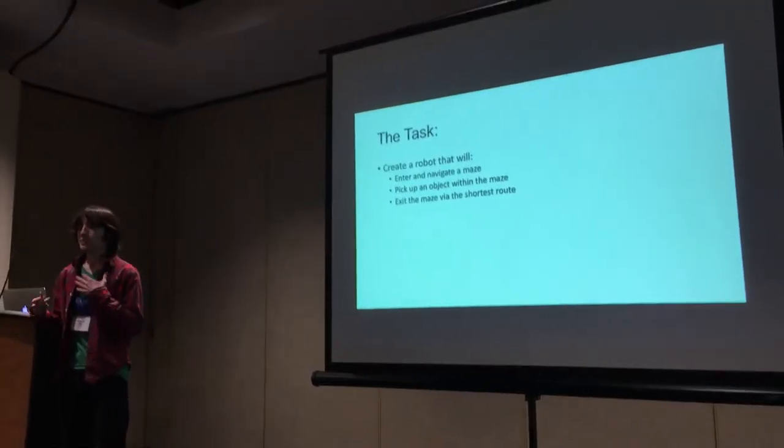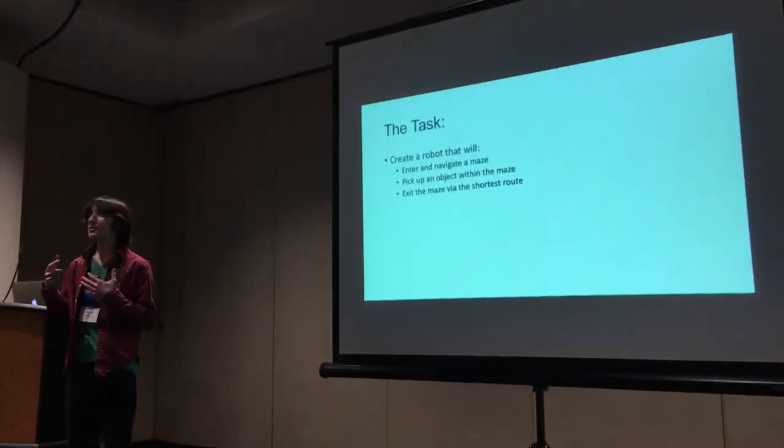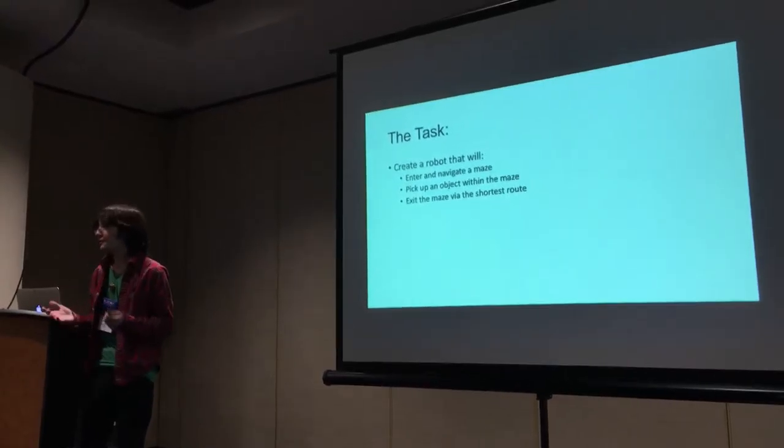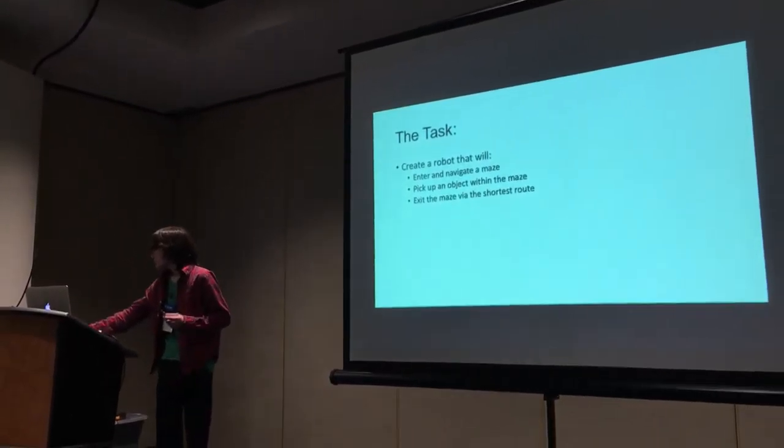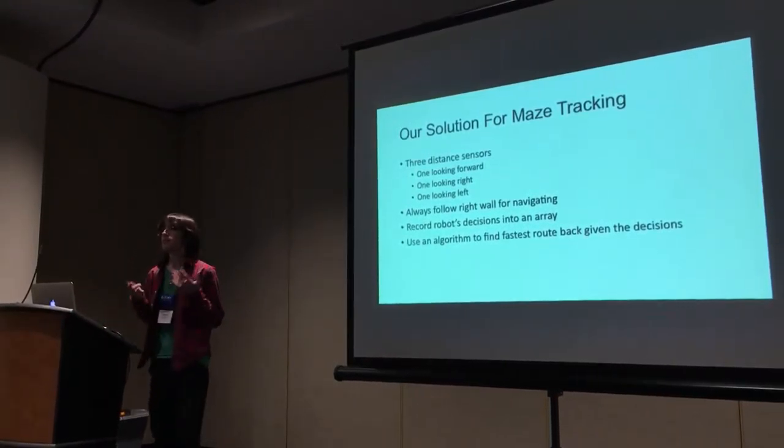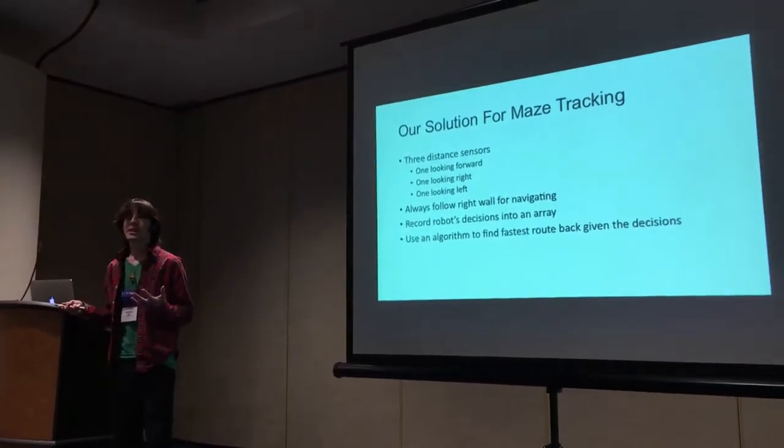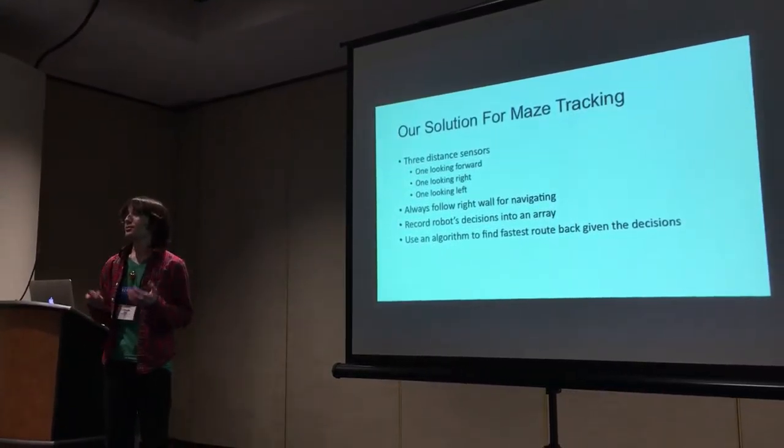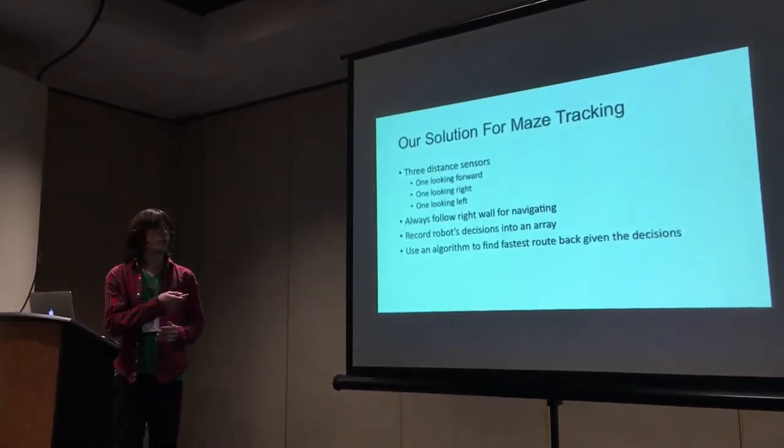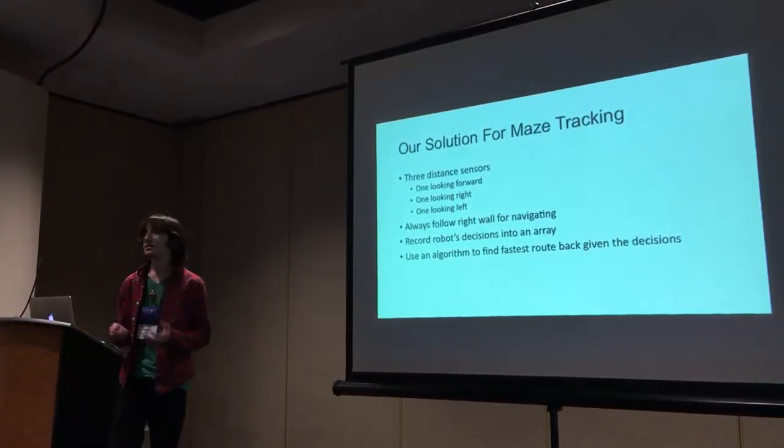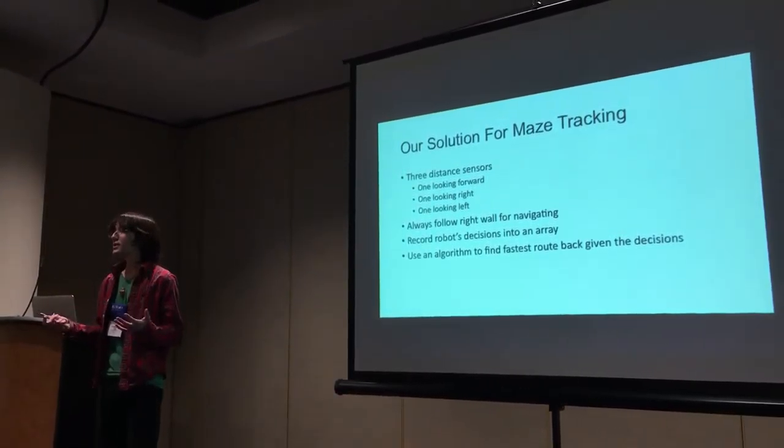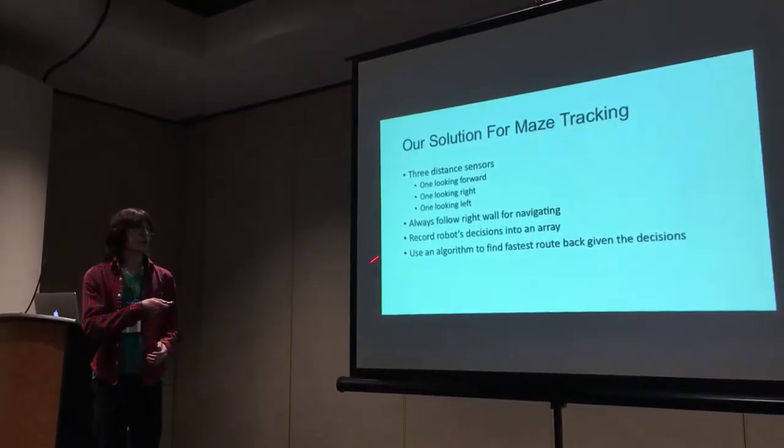This presentation will focus on the algorithm I wrote to find the shortest way out of the maze. Our solution for maze tracking uses three distance sensors on the robot: one facing forward, one looking right, and one looking left. For navigating to the object, we always follow the right wall, and every decision the robot makes is recorded into an array.